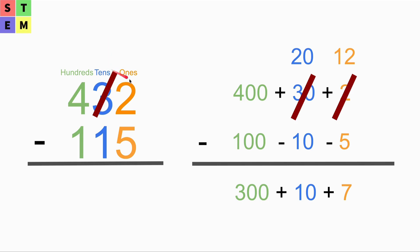So the 3 becomes 2, and here becomes 12 at the ones place. The 2 is gone because we have 12 here.